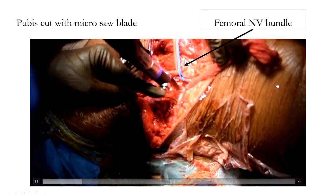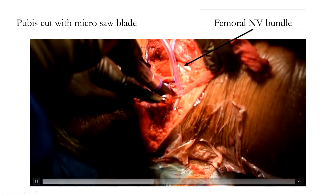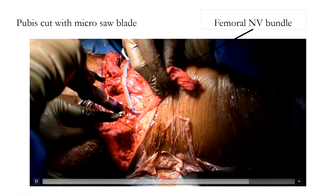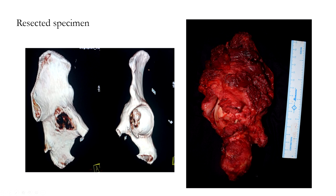Once the posterior iliac cut was complete, the superior pubic ramus was cut anteriorly using a micro saw after isolating and protecting the femoral neurovascular bundle. The ischial cut was then performed to resect the tumour mass in toto. Special consideration was taken while resecting the sacrospinous ligament.